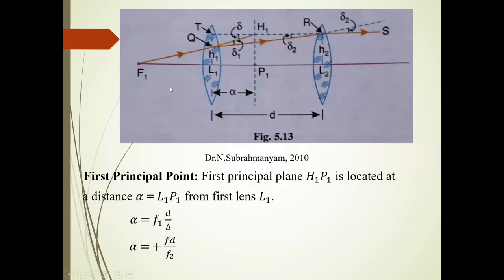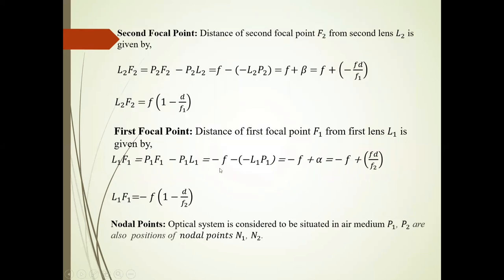So it is equal to minus F, P1 F1 is minus F, minus L1 P1. So minus F plus alpha, minus F plus value of this alpha is F D upon F2. So L1 F1 is minus F into 1 minus D upon F2. These are the focal points.